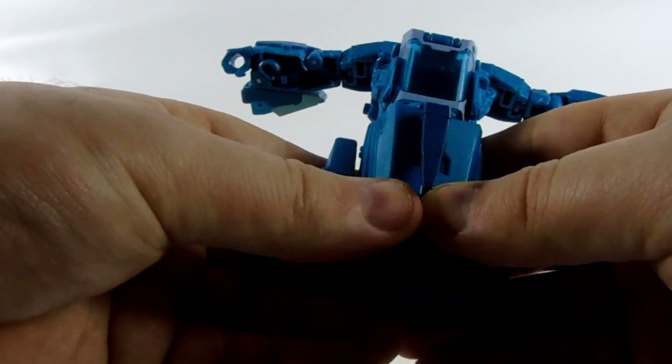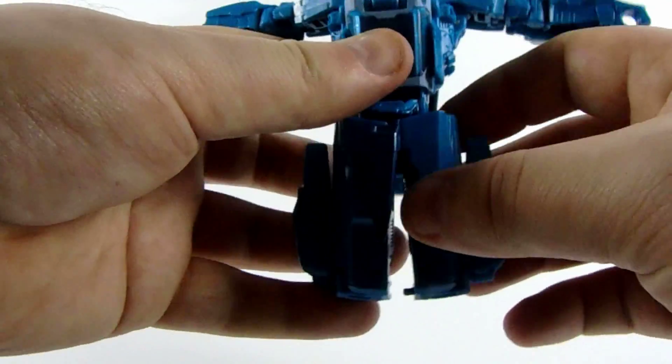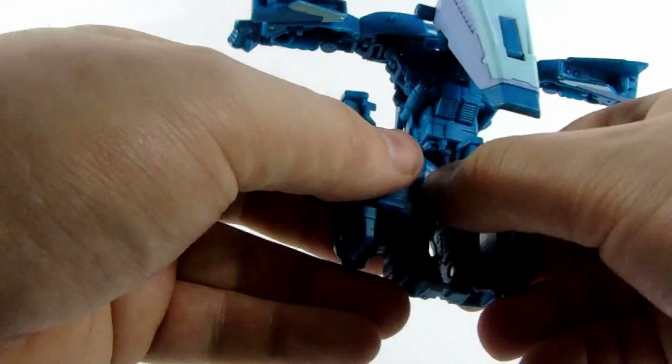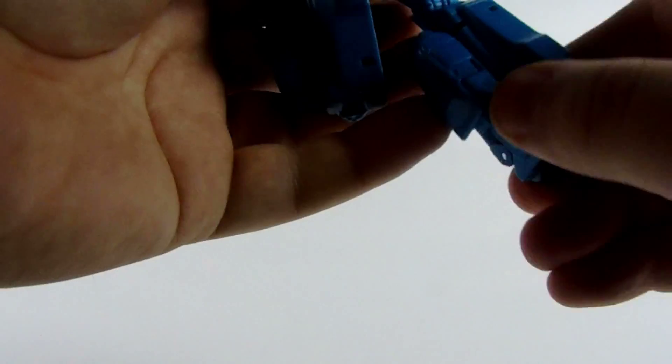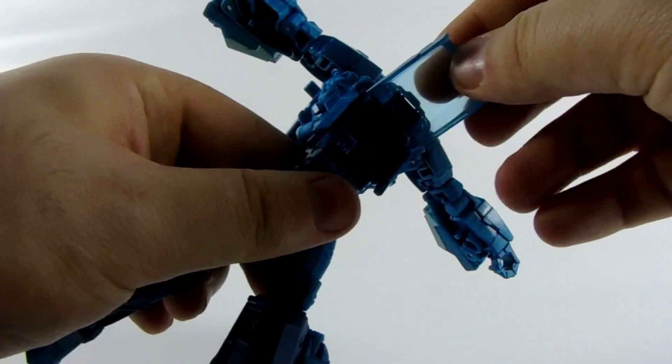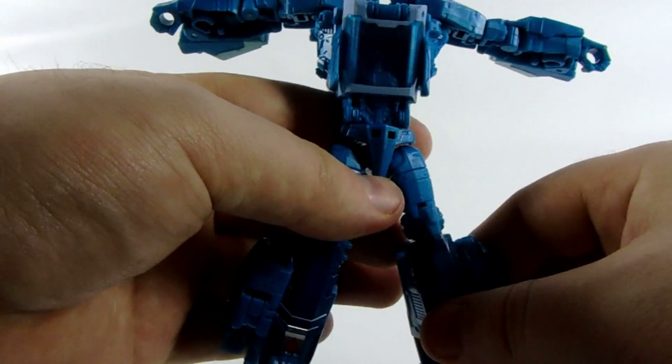Then you want to pull this part down. It just clips in behind, snaps away. Really simple transformation this one to be honest. You just want to separate this bit here and then basically you just grab this bit and fold it out. It opens up, exposes the thigh. You just pull it down, twist that round and pull his foot down. That's one leg. Second leg, same as the first. Turn that round and put that down.